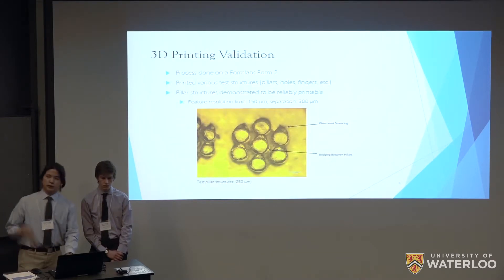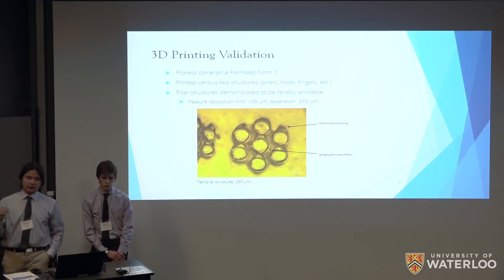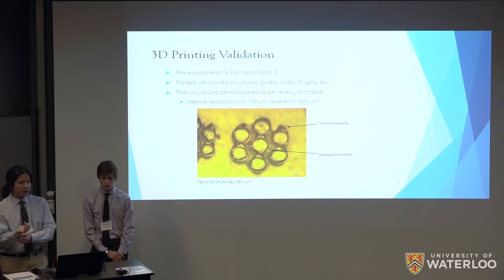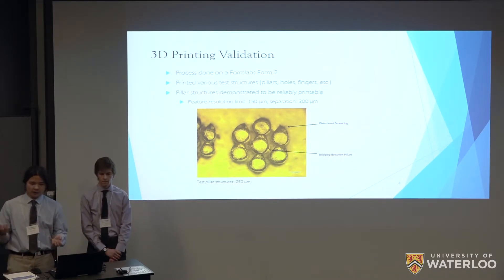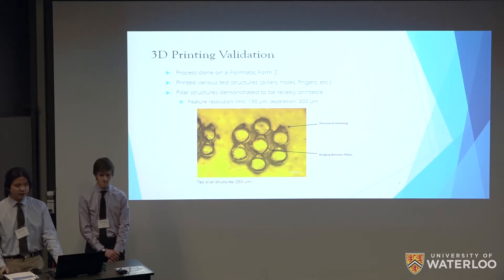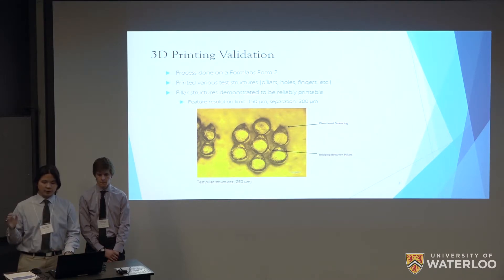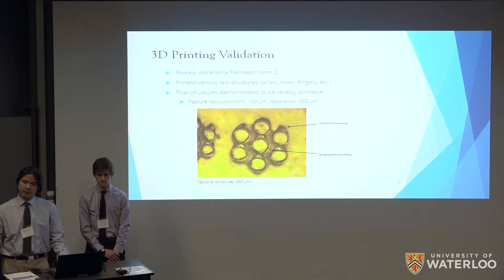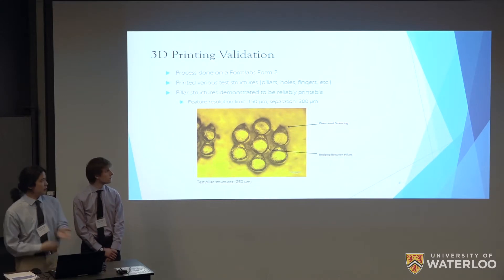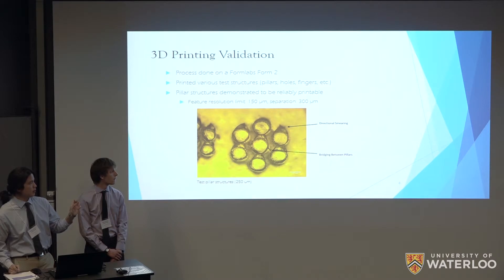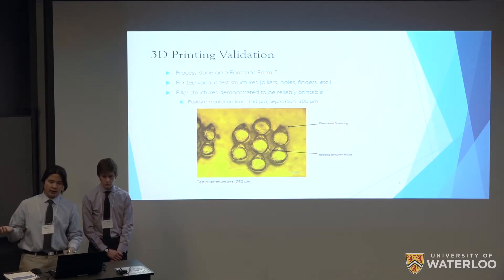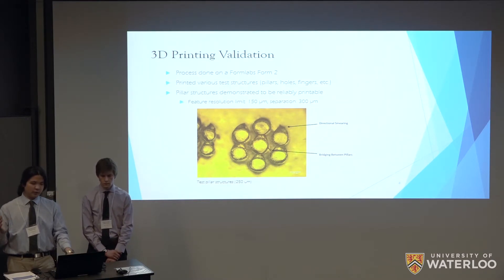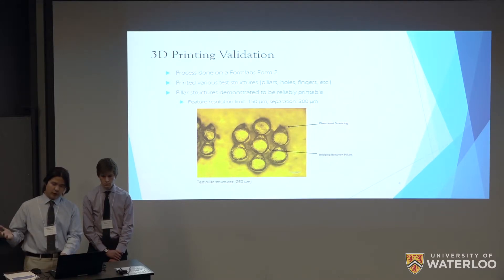So how do we make sure that our 3D printing process can actually replicate the design we have for the lens? The 3D printing for this project was done on a Formlabs Form 2 printer supplied by our Professor Baiqi. We printed various test structures such as pillars, holes, fingers and other structures. We found that through visual examination the pillar structure is demonstrated to be the most reliably printable. We found that the feature resolution was about 150 microns with a separation required about 300 microns. You can see on this picture of the test structure, we have 250 micron pillars in close proximity to each other so we can see some imperfections in the printing including smearing and linkage between the different pillars. In the final production of the lens, we've designed that so the pillars are much farther apart from each other than what is shown here.